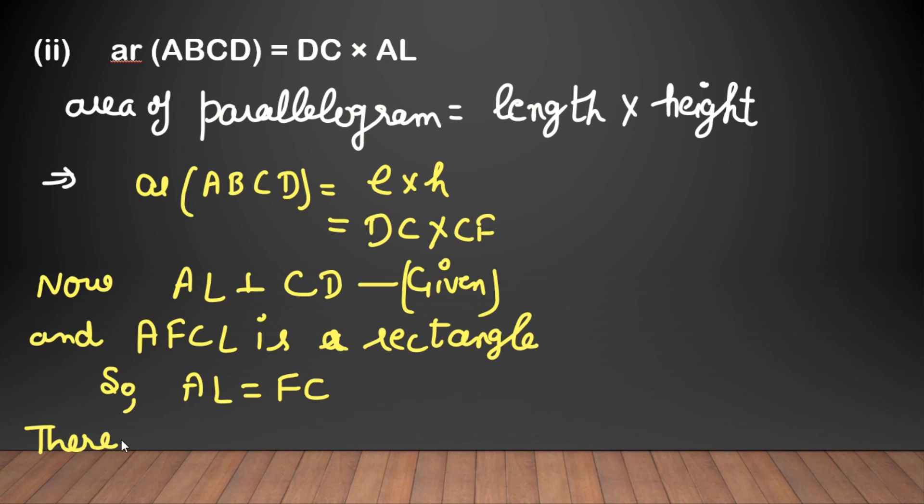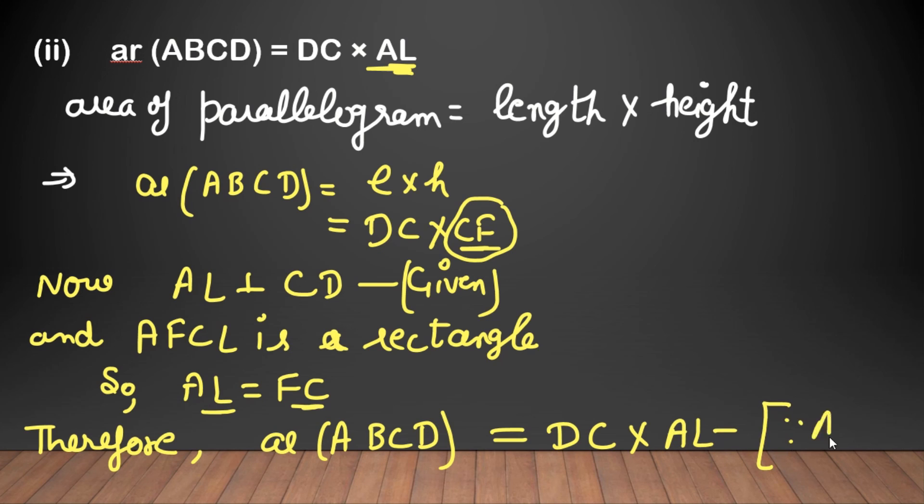Therefore, area of ABCD equals DC into - we have to prove AL. AL equal to FC, we can say CF. Because AL equal to FC, we can say CF, so we can prove. This completes the two parts of example number one.